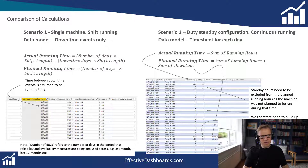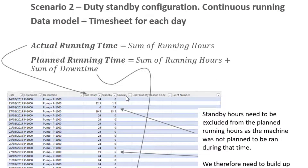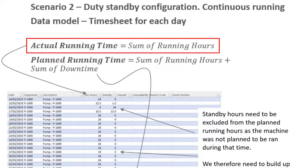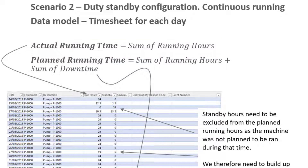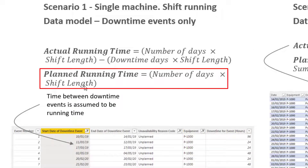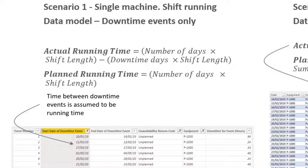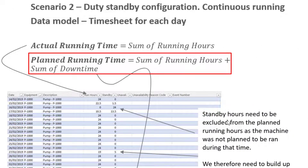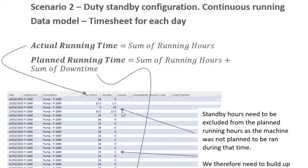When it comes to timesheet style data for scenario two, we explicitly know when the machine was running, unavailable, or on standby. So all we need to do is create a sum of the running hours to get the actual running time. For planned running time — what we expected the machine to be running — in scenario one it was simply the number of days times the shift length. In scenario two, we can't assume the machine was running every single day because it may have been on standby. So planned running time is the sum of the run hours plus the sum of the downtime hours — we don't include the standby.